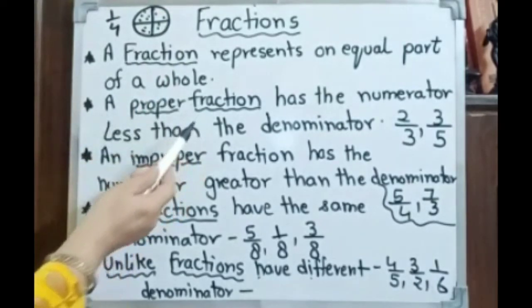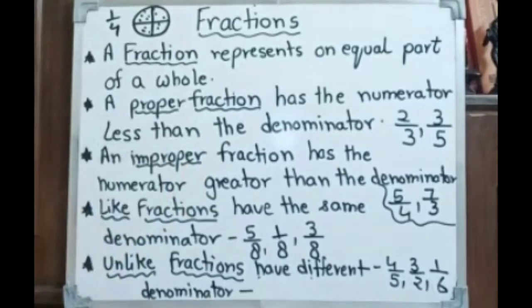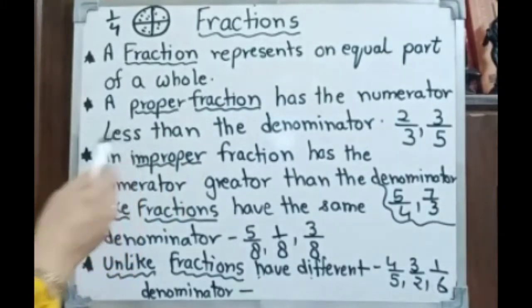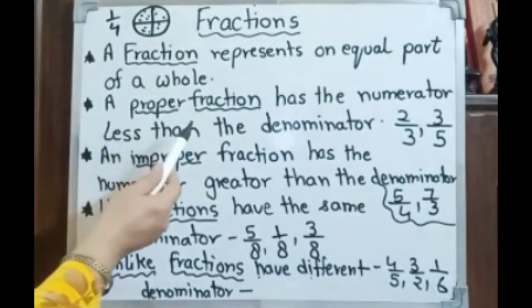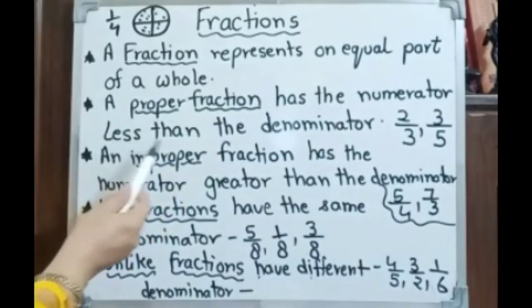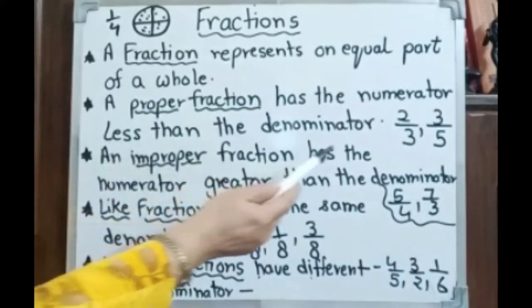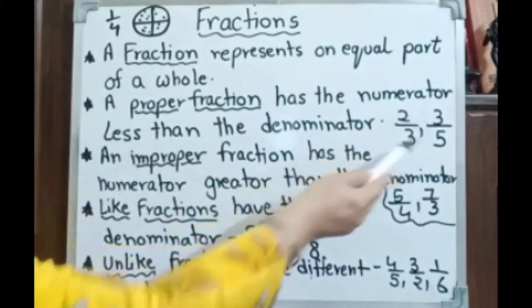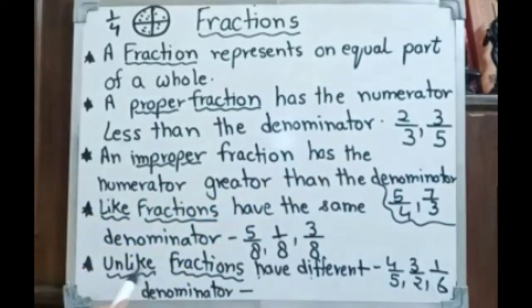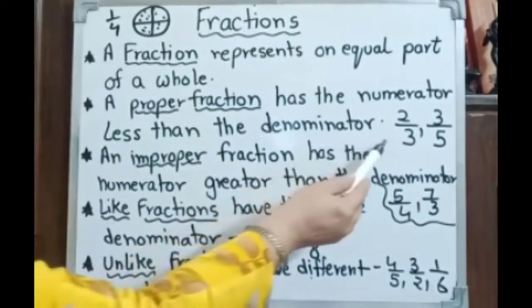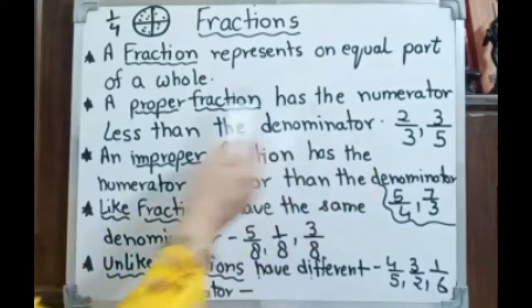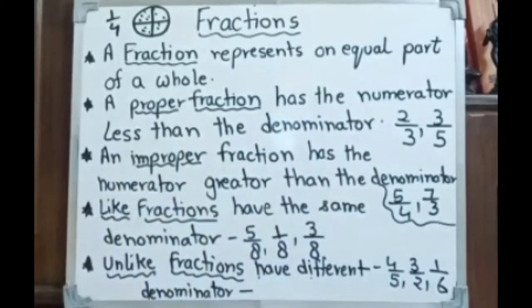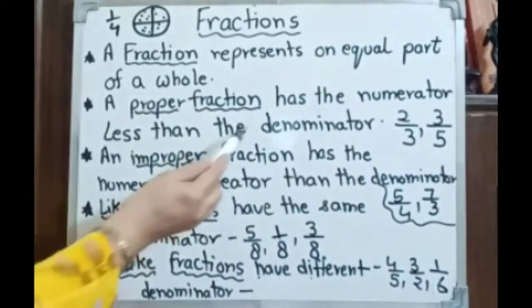A proper fraction, as you have learned in class 3 and 4 — let's revise this quickly. A proper fraction has a numerator less than the denominator. For example, 2 by 3, 3 by 5. The upper side is the numerator and the lower side is the denominator.